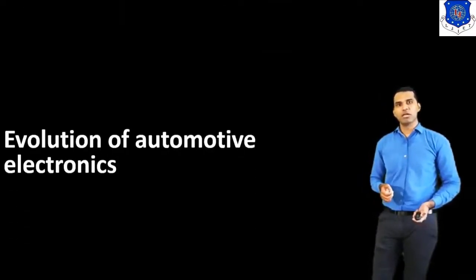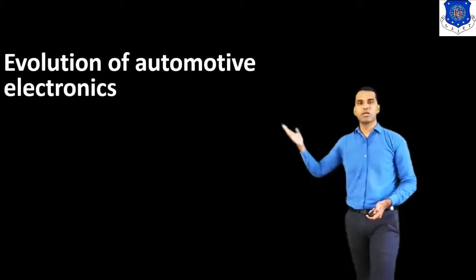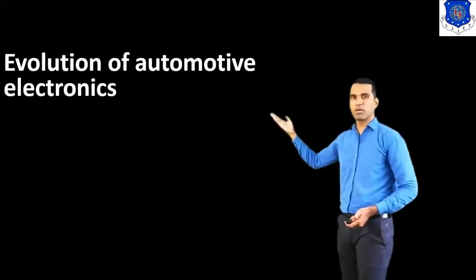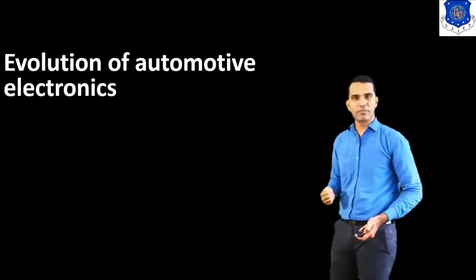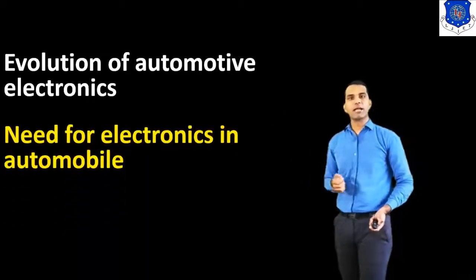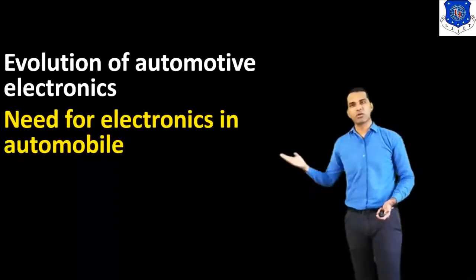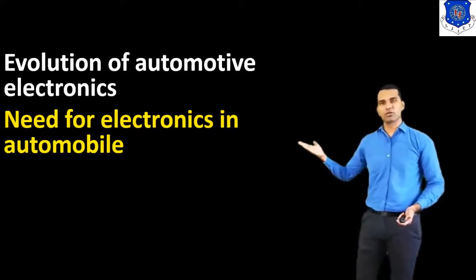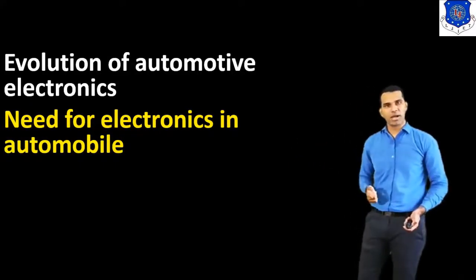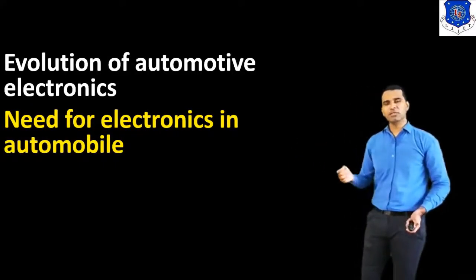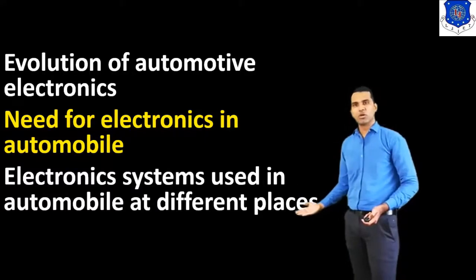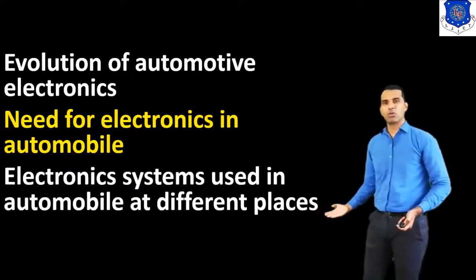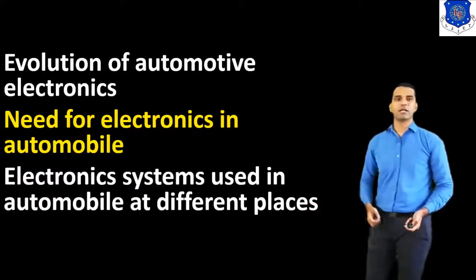So, in this lecture, we first discussed the evolution of automotive electronics. Then, we discussed the need for electronics in the automobile. And last, we discussed the electronic systems used in the automobile at different places. Thank you.